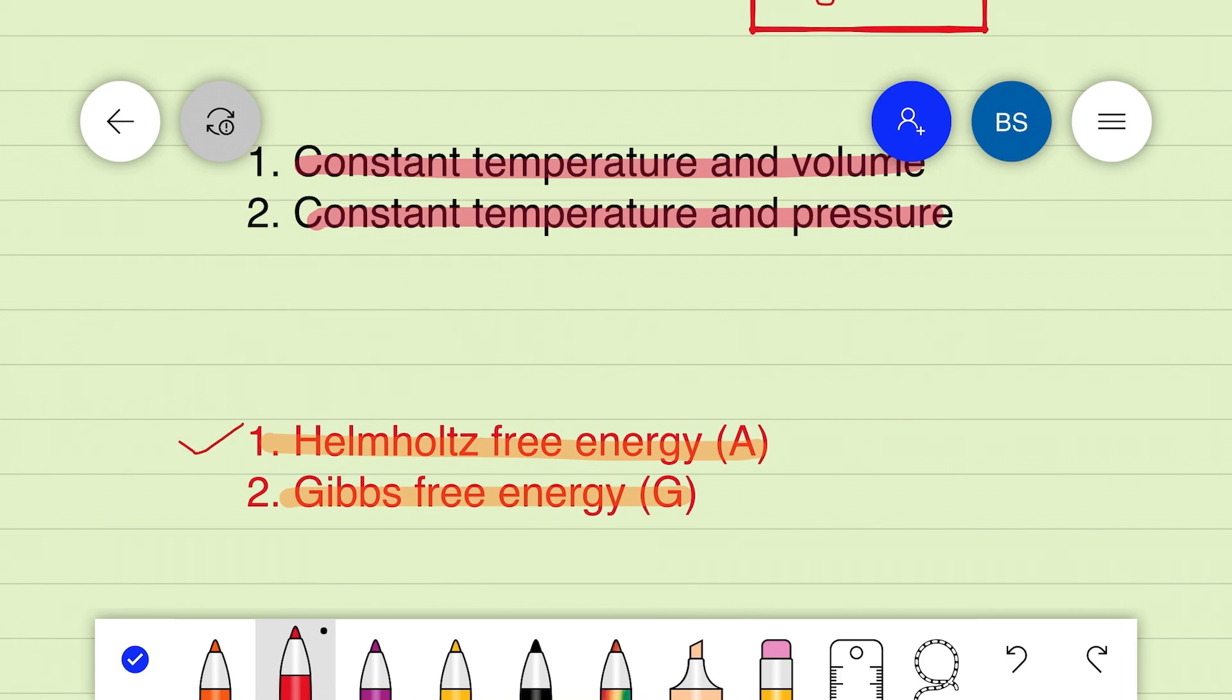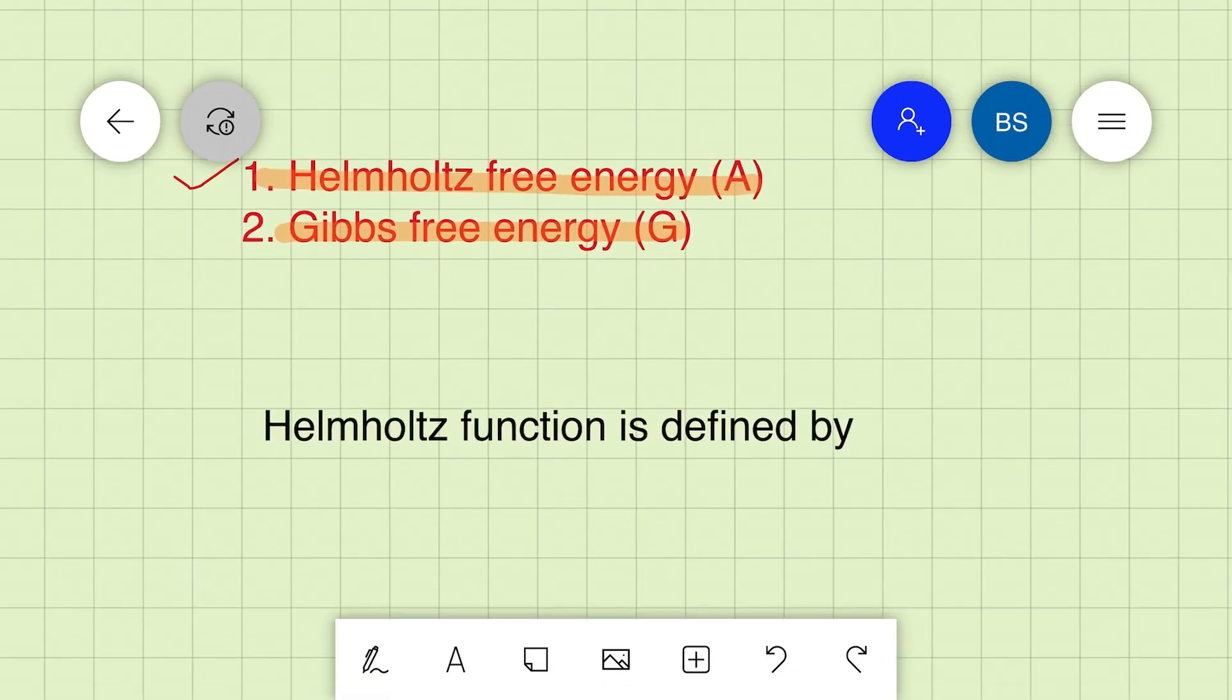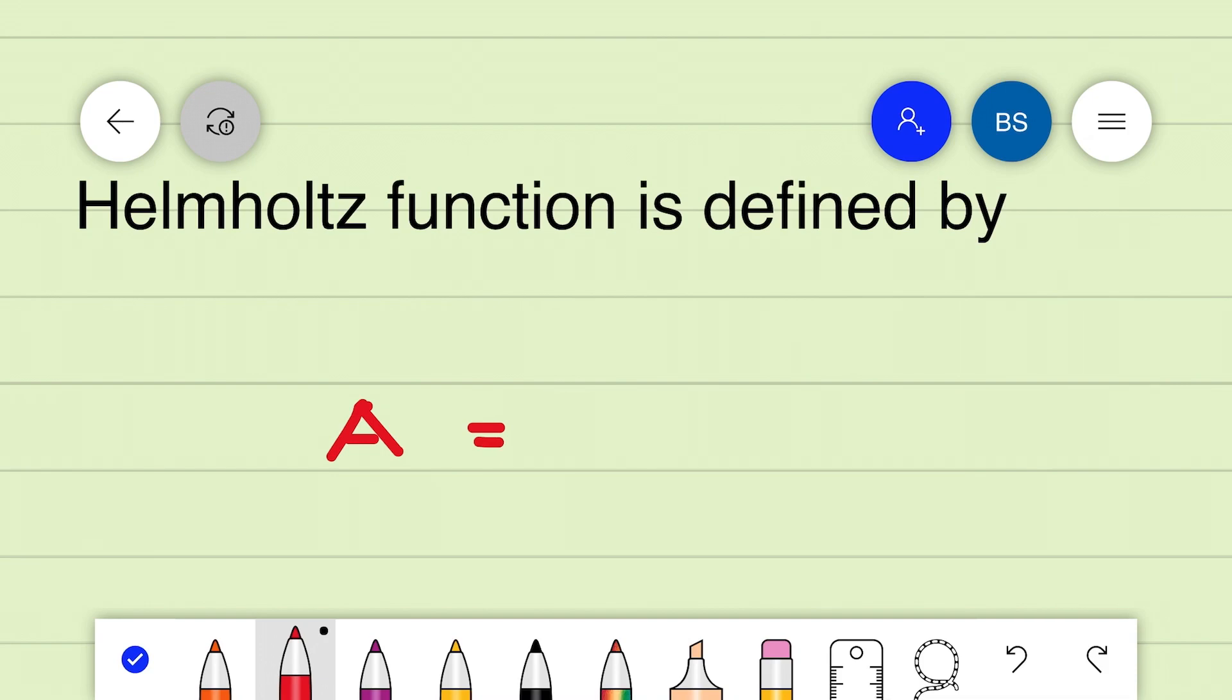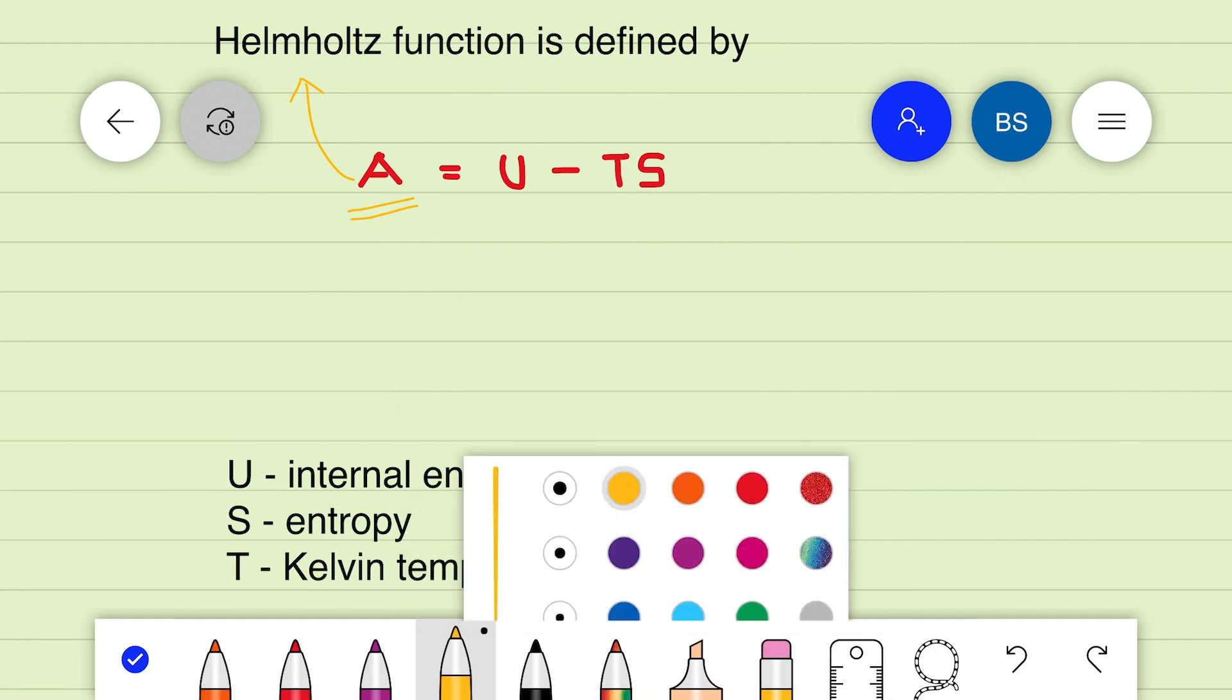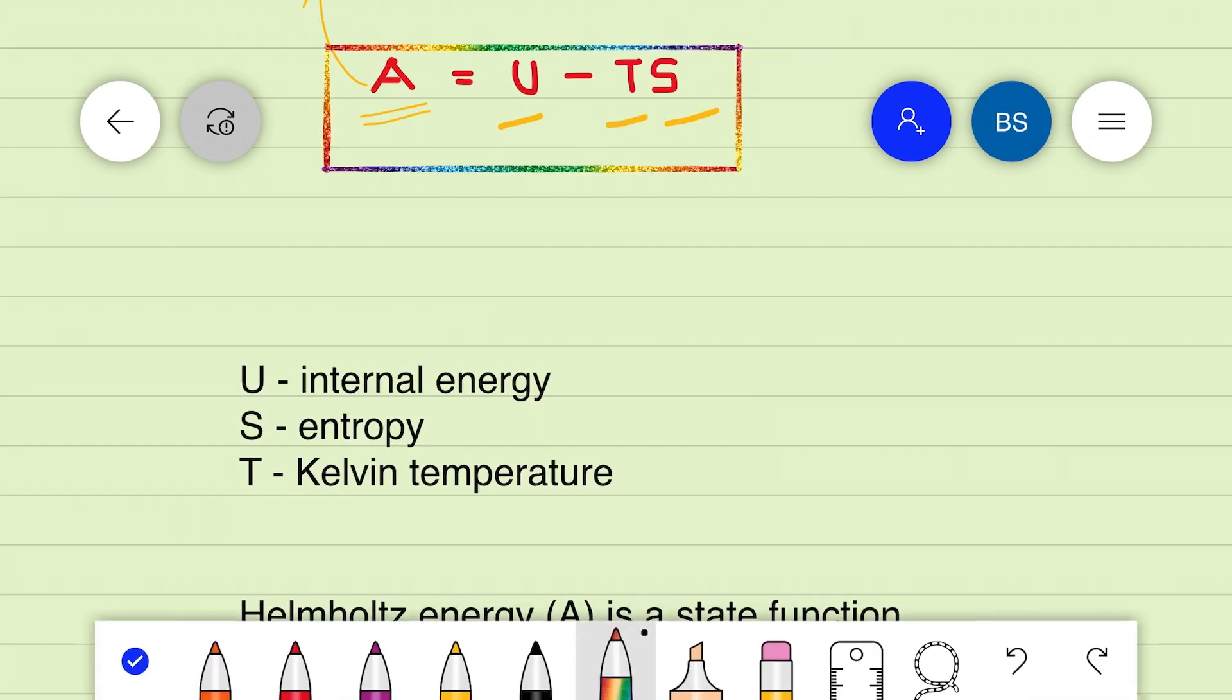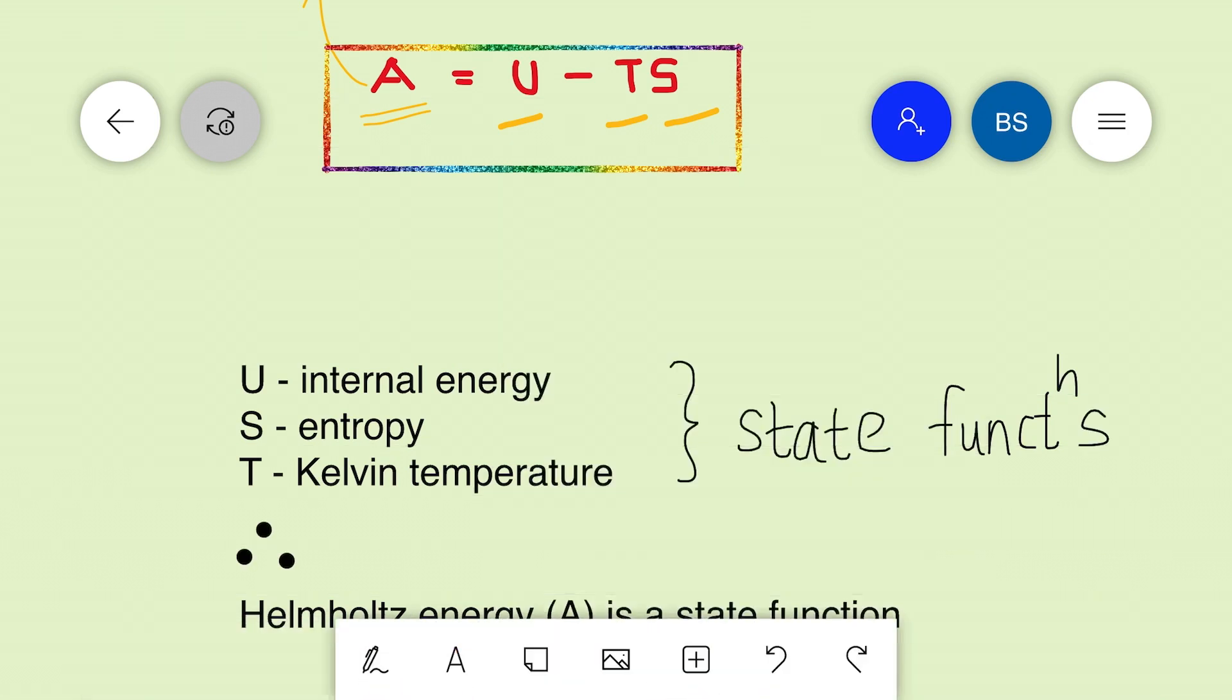The work function or Helmholtz free energy of a system is defined as A equals U minus TS, where A represents the Helmholtz free energy, U is the internal energy of the system, S is the entropy, and T is the temperature measured in Kelvin scale. Since internal energy, entropy, and temperature are state functions, obviously the Helmholtz free energy is also a state function.